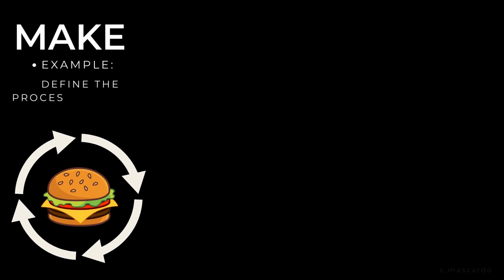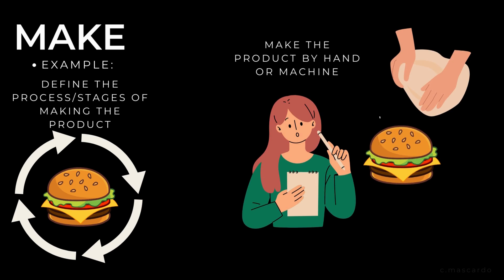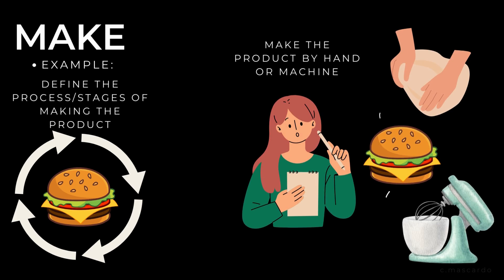Example for make: You need to manage the process of making your hamburgers. It will help if you can define the stages of your manufacturing process and how long each of them will take. You may also need to decide whether you should make the hamburgers by hand, or if you can buy a machine that can make them better, faster, and cheaper than a person.